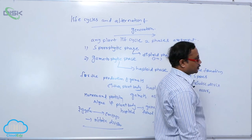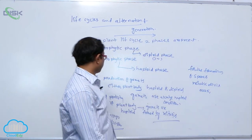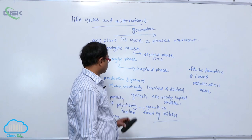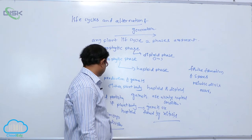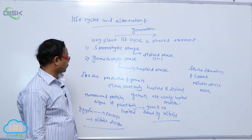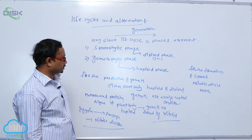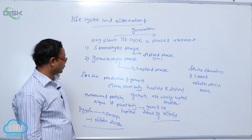It means, if plant body is haploid or diploid, gametes are always haploid condition. So, in monera and protista, algae, if plant body is haploid, gametes are formed by mitosis.